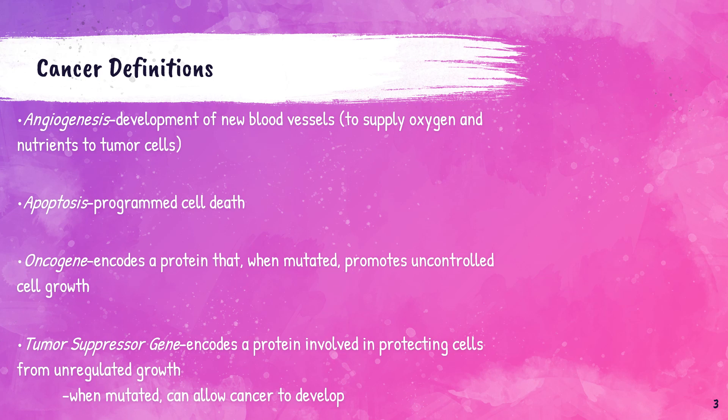An oncogene is a gene that is a mutated form of a gene involved in normal cell growth. Oncogenes may cause the growth of cancer cells, and mutations that become oncogenes can be inherited or caused by exposure to carcinogenic substances in the environment. A tumor suppressor gene, or anti-oncogene, is a gene that regulates a cell during cell division and replication. If the cell grows uncontrollably, it will result in cancer. When a tumor suppressor gene is mutated, it results in a loss or reduction in its function.